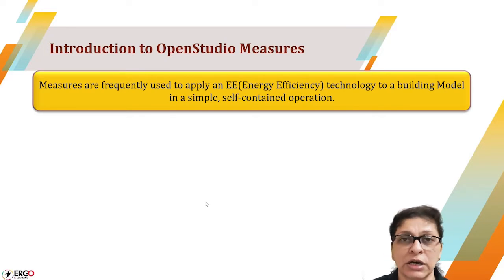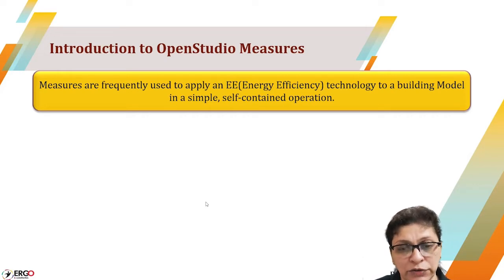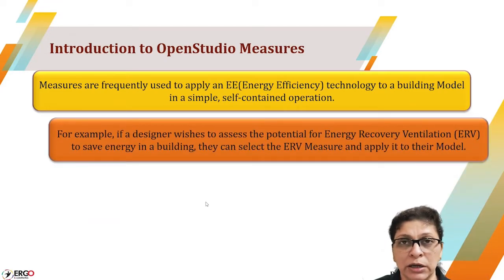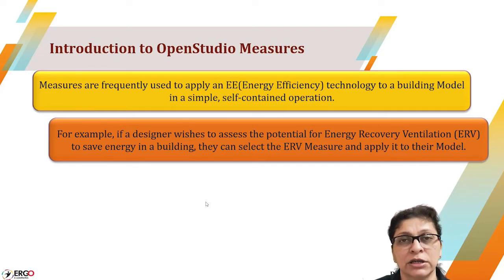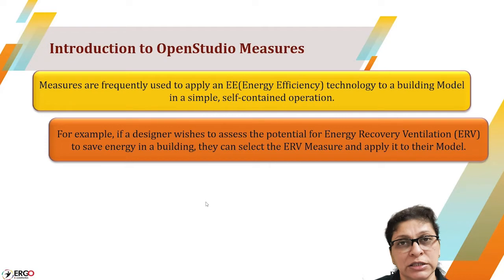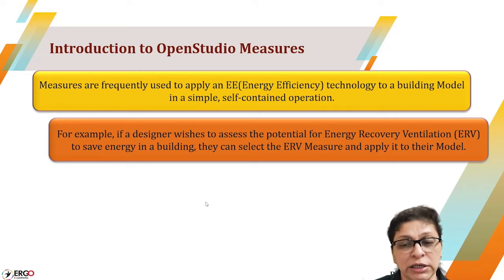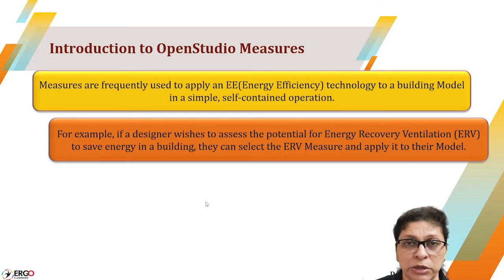Measures are basically called energy efficiency technology, or EE for short, and they are very simple self-contained operations. For example, to a building with an HVAC system we may wish to apply an ERV system — that is, energy recovery ventilation, also known as an enthalpy wheel — which exchanges heat between outgoing cold air and incoming ambient air. How this heat exchange achieved with the ERV wheel can save energy in a simulation engine is explained in this video series.